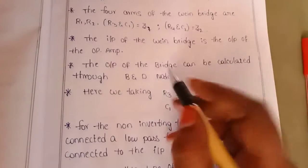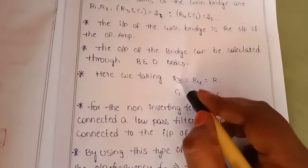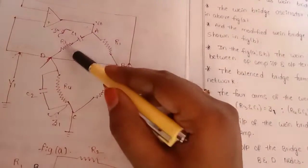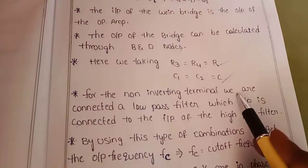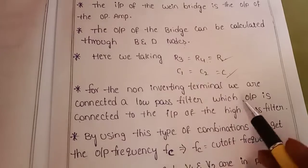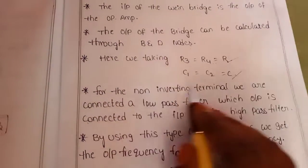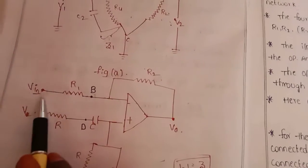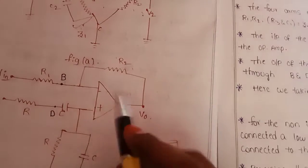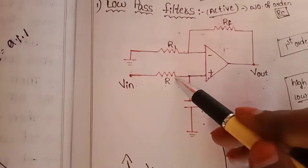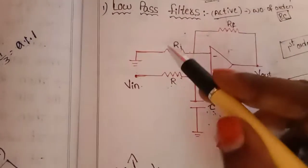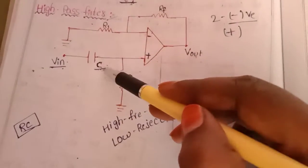Here, R3 and R4 are equal to R, and the capacitances C1 and C2 are equal to C. For the non-inverting terminal, we are connected to a low pass filter, whose output is connected to the input of the high pass filter. This is a low pass filter — one resistance and one capacitance.